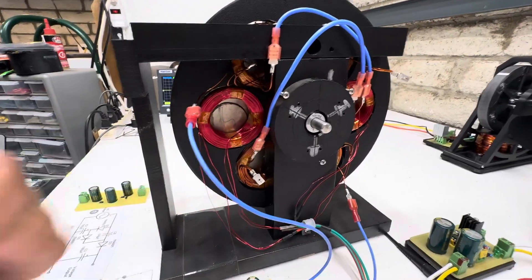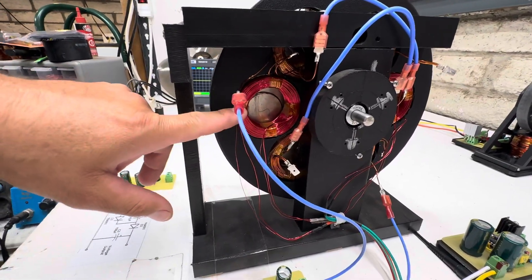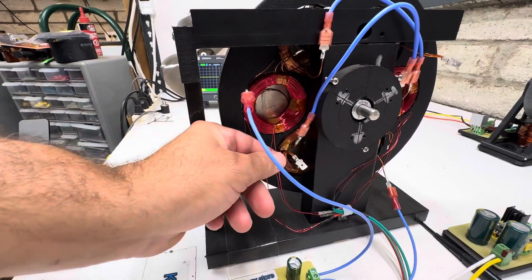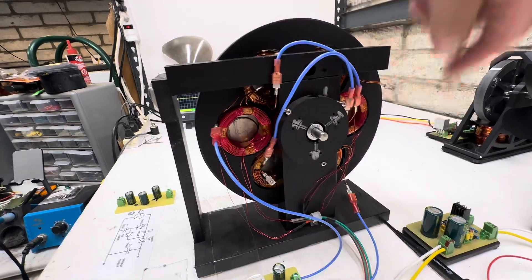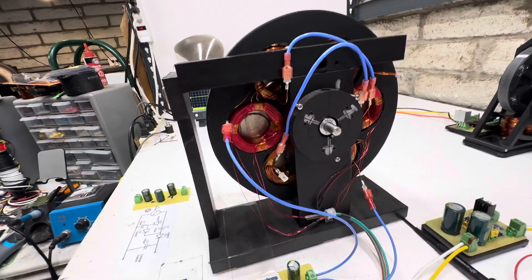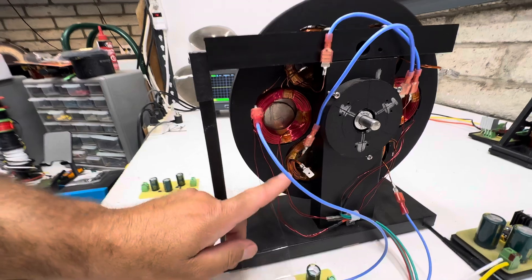And then I rewound these with 20 and 26 gauge and then I put them in series, these two. So these are pairs and then these are pairs and these are pairs.